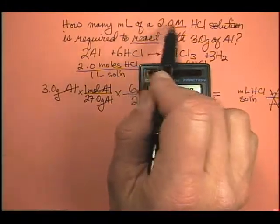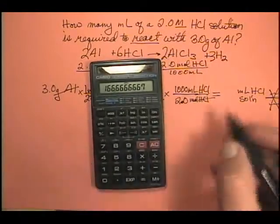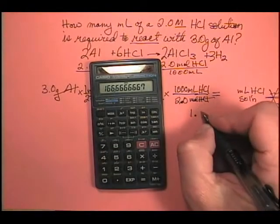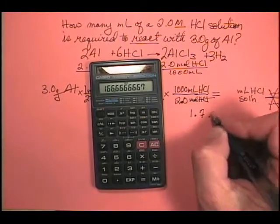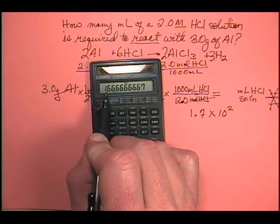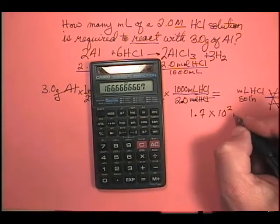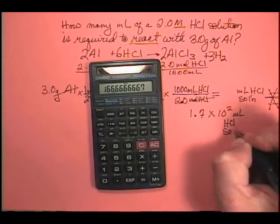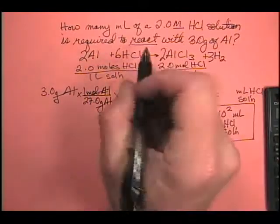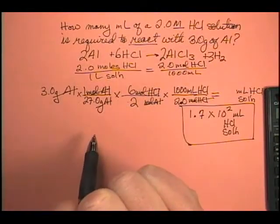Okay, so how many figs can we keep? 2. So I can't, I have to use scientific notation. So remember that 166.667 is going to become 1.7 times 10 to the second. So I'm going to move that thing over once, twice, 166. Well, that second 6 makes a 6 of 7. 1.7 times 10 to the second milliliters of HCl solution. So about 170 milliliters of HCl are required to react of this concentration with 3 grams of aluminum.